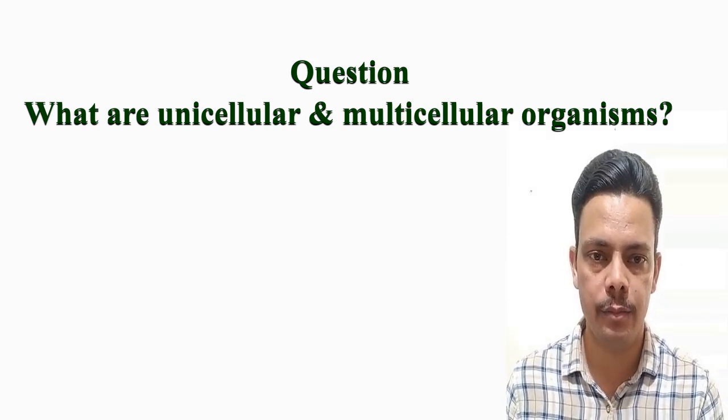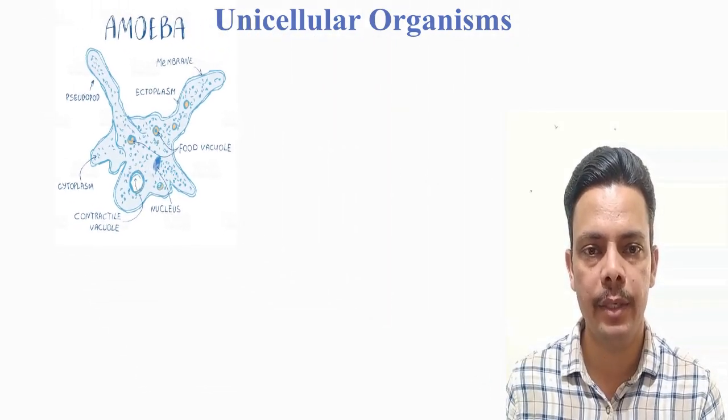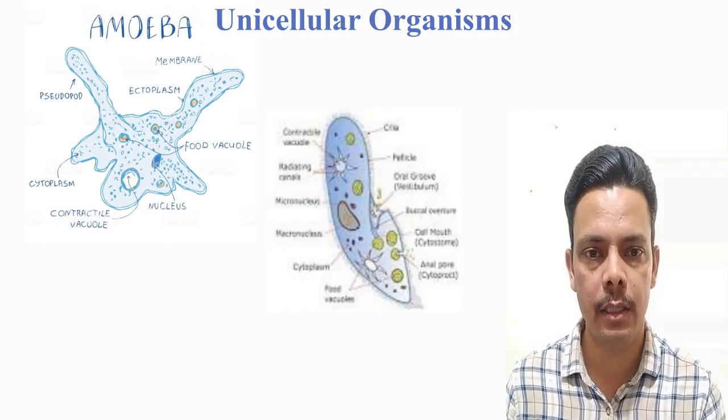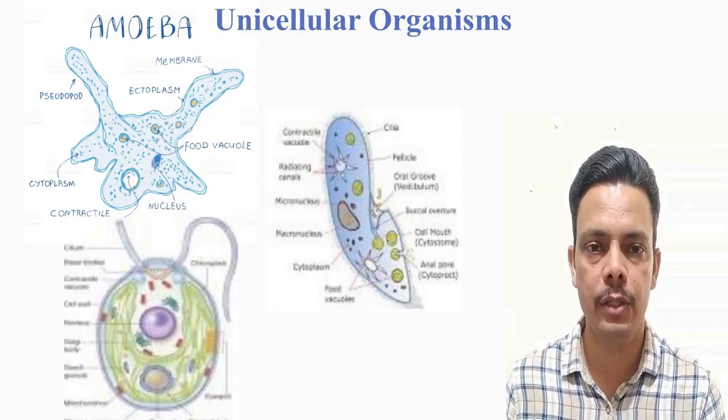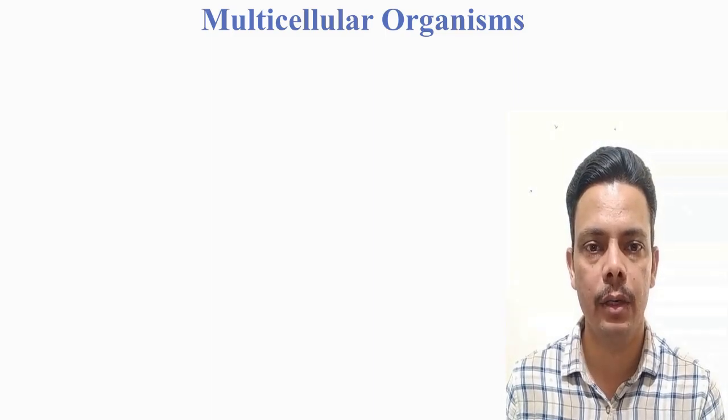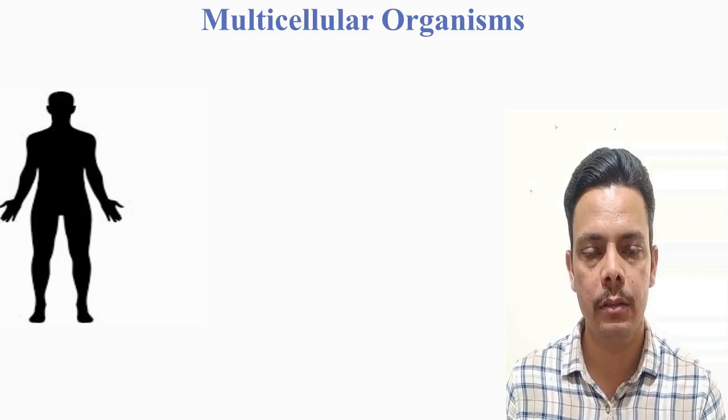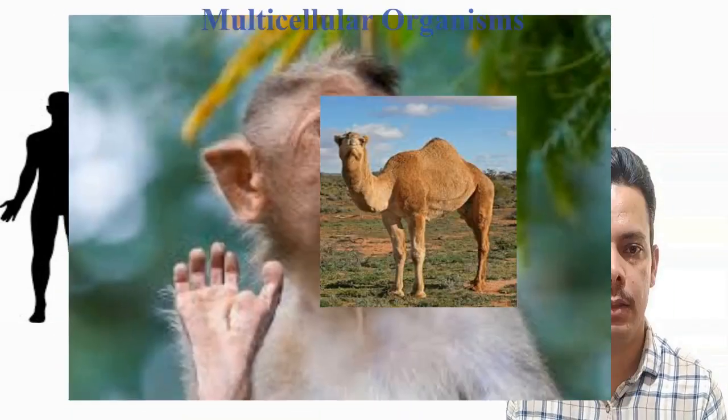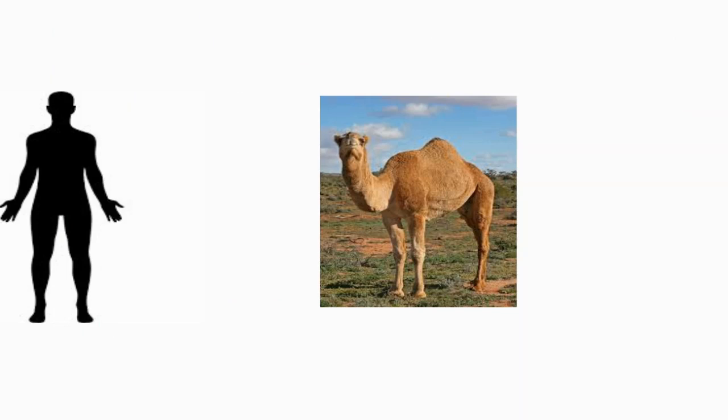After Robert Hooke, Antonie van Leeuwenhoek in 1674 took some water from the common pond and observed under a little advanced microscope, and he observed one-cell organisms. From there it was clear that there are smaller organisms made up of one cell. What are unicellular and multicellular organisms? Organisms made up of one cell like amoeba, paramecium, chlamydomonas are called unicellular organisms. Organisms made up of more cells like human, monkey, camel are called multicellular organisms.